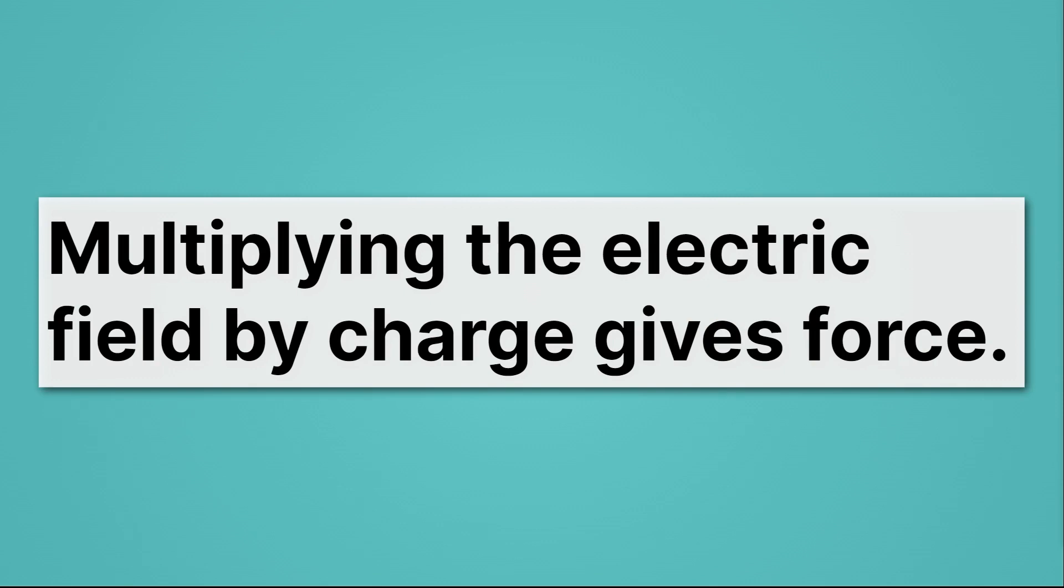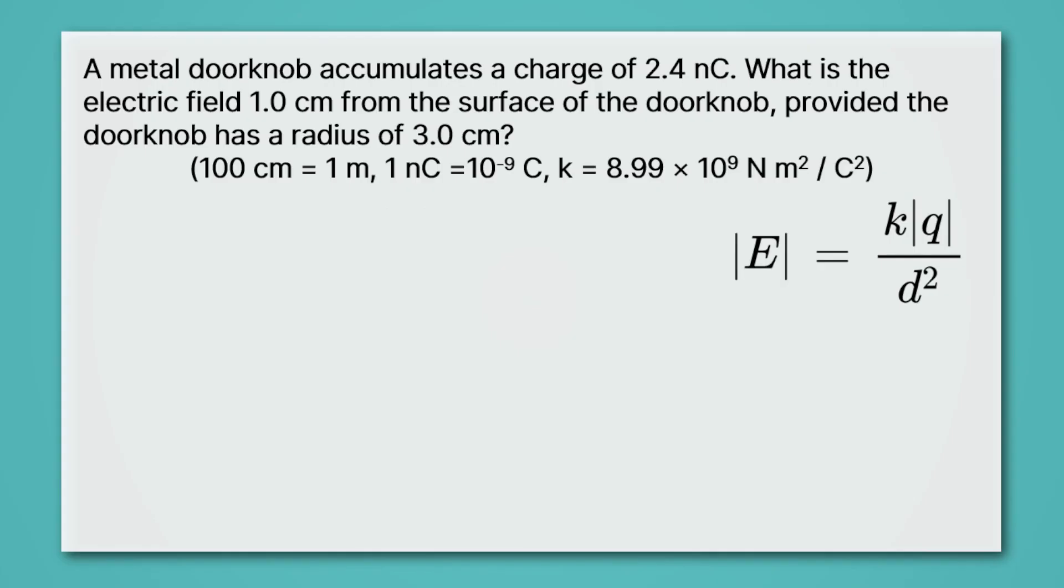Let's practice calculating the electric field. This problem says a metal doorknob accumulates a charge of 2.4 nanocoulombs. What is the electric field one centimeter from the surface of the doorknob, provided the doorknob has a radius of three centimeters? Let's start with a picture. We can basically think of our doorknob as a circle. And we know its radius. Its radius is three centimeters. But we're not interested in the electric field right at the surface of the doorknob, but an additional centimeter away, as stated in the problem. So an additional one centimeter away. That means when I calculate d, that goes into my electric field formula, I need to take into account that total distance, which is going to be one centimeter plus my three centimeters, for a total of four centimeters.